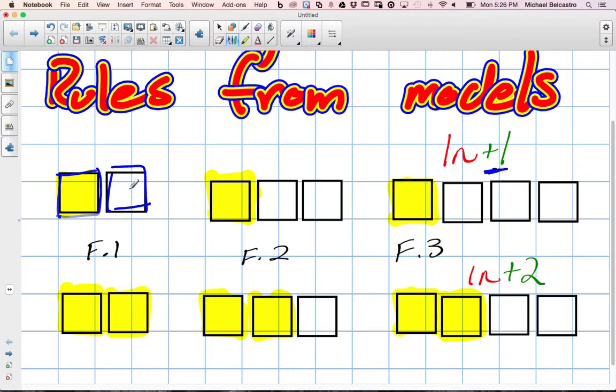So our constant we wrote in green, it's always going to be there, we always had this one here. So we always had that one, and then we increased for every figure number. The n represents the figure number, so in figure one, we increased by one. In figure two, we increased by one from figure one, and we had two. And we had three in this one.